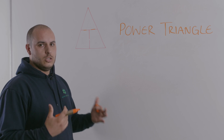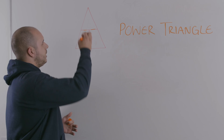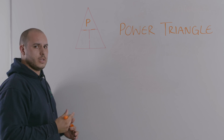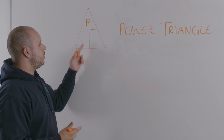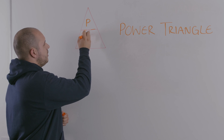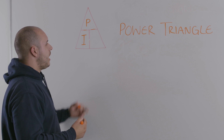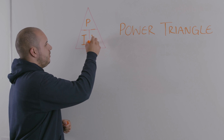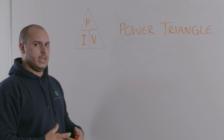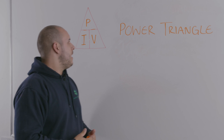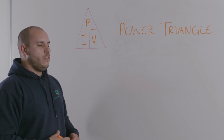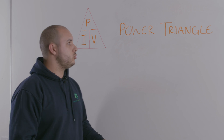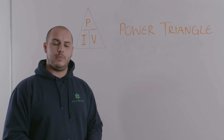On the triangle, you're going to have at the top the letter P for power, and then on the bottom you're going to have the I, which is for current, and in the bottom corner you're going to have the V for voltage — so PIV. Basically what you're going to do, very much the same as the Ohm's Law Triangle: when you're working out your calculations, as long as you've got two of the values, you should be able to get the third.